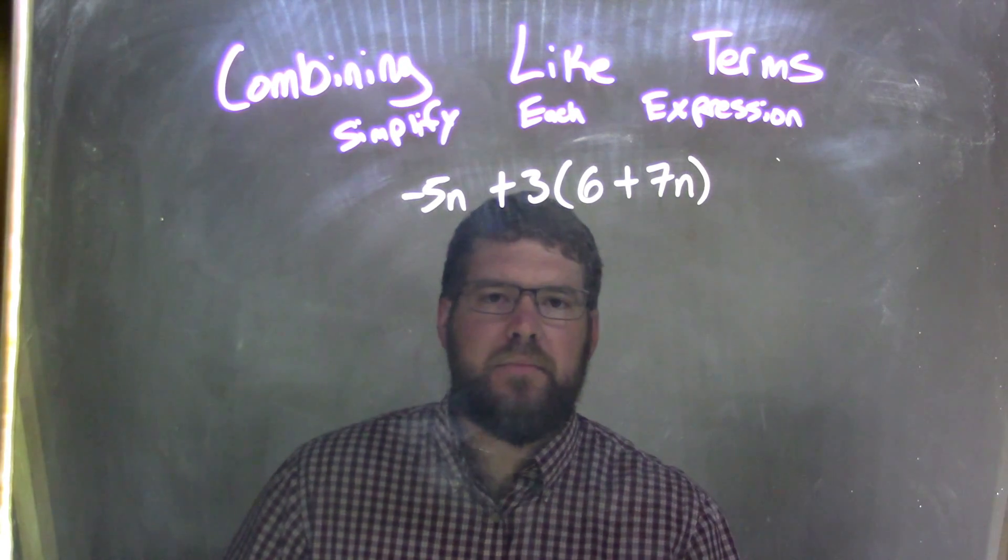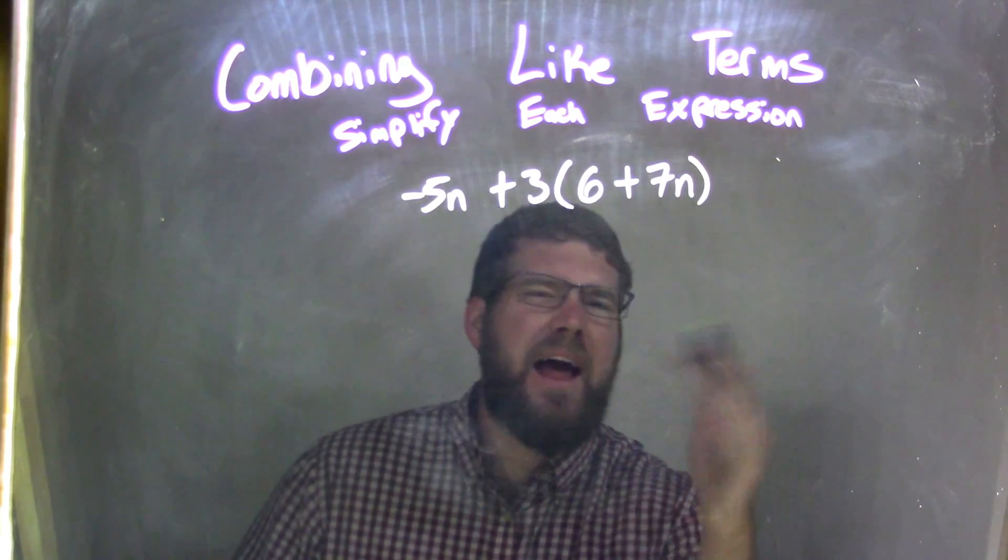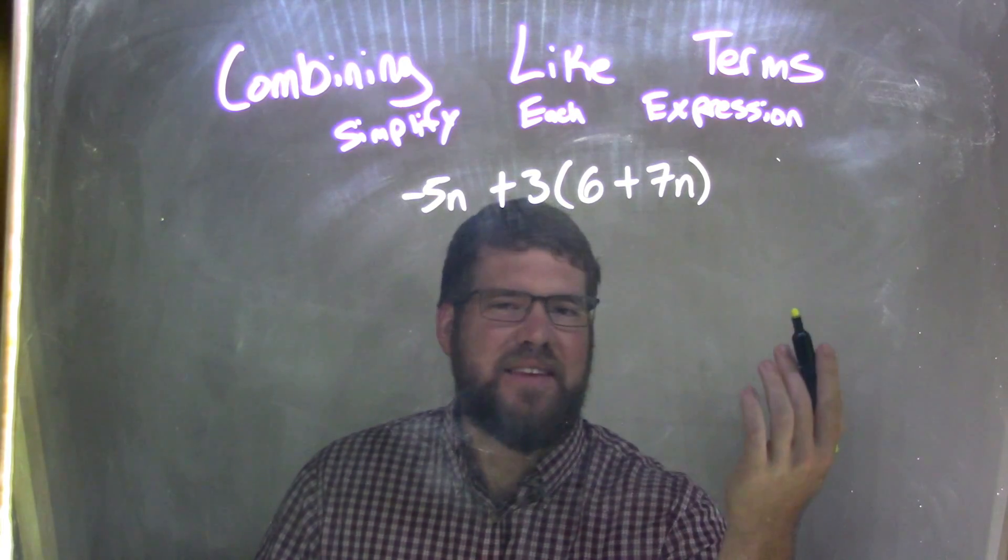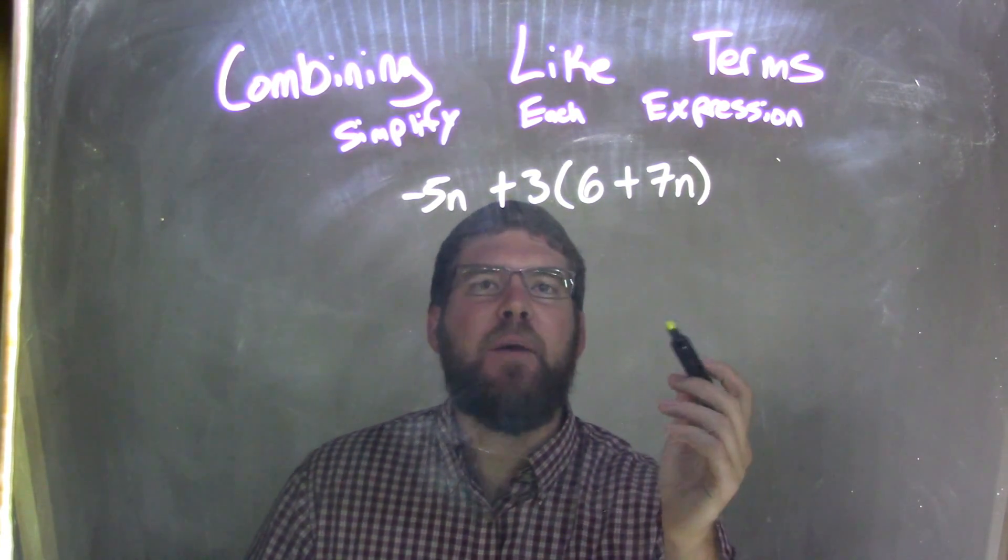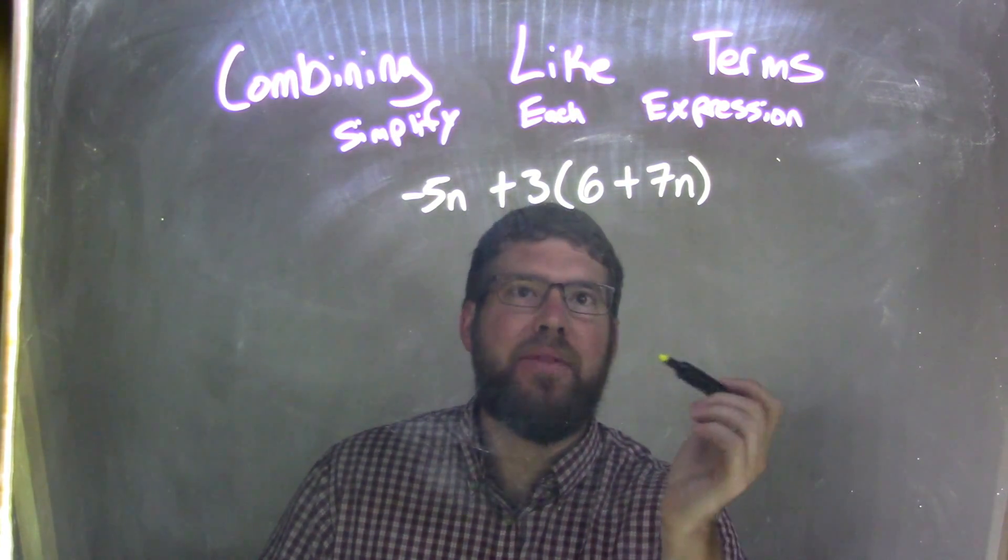Well, we know inside the parentheses we need to deal with that first, but they're not like terms, so 6 and 7n can't do it. So now we have a 3 on the outside, so I need to distribute that 3.